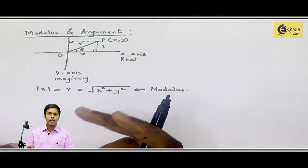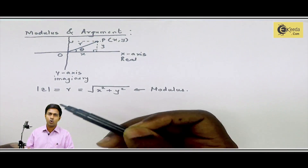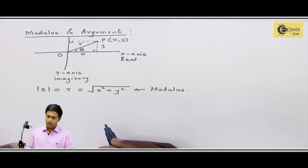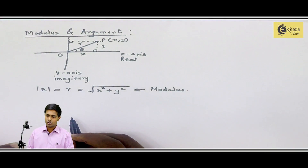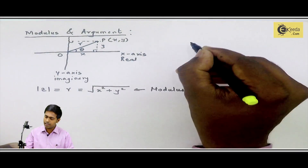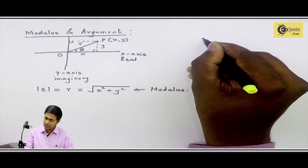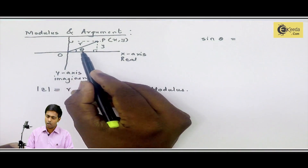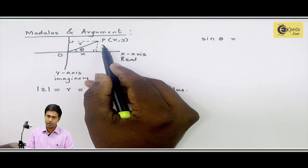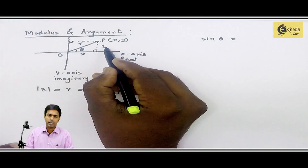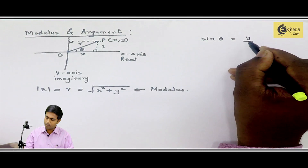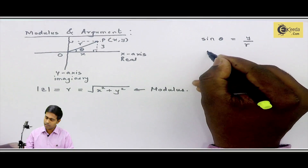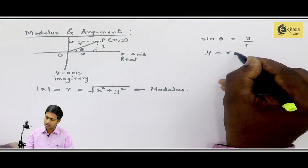Similarly, we can find out the argument, which is also called the amplitude of the complex number. For that, I will use some trigonometric ratios. From the diagram, what is sine theta? Sine theta is opposite side upon hypotenuse. The opposite side is y, so sine theta equals y upon R. From this, we get the relation y = R sine theta.